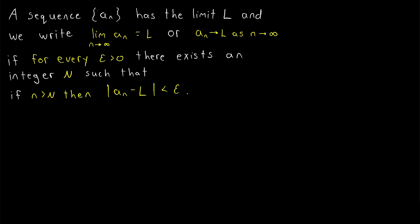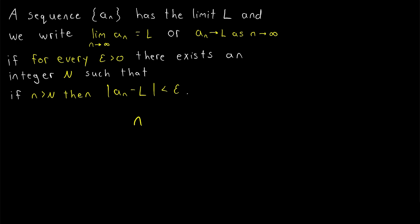One thing to note: some texts use a different inequality — little n greater than or equal to big N instead of strictly greater than. It's not a huge difference, but something to be aware of. In our previous example, the inequality holds whenever n is greater than 100, but not when n equals 100.